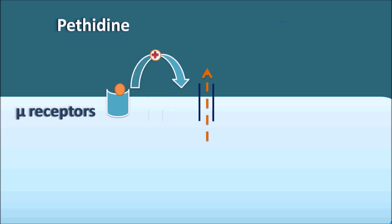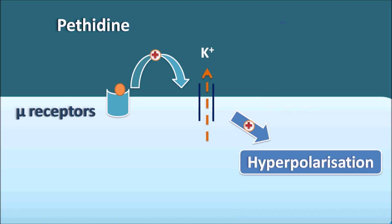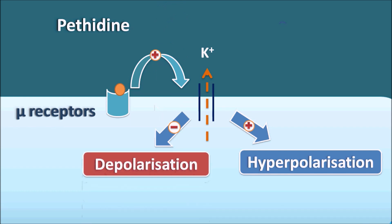These are outgoing potassium channels. When potassium flows outside, it produces hyperpolarization. The outflow through potassium channels also inhibits depolarization of the membrane, resulting in inhibition of pain transmission. In this way Pethidine inhibits neurotransmission by acting on the mu receptors, which open potassium channels leading to hyperpolarization.